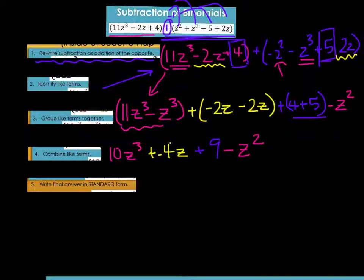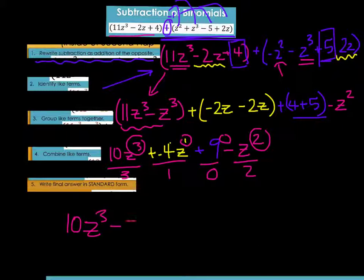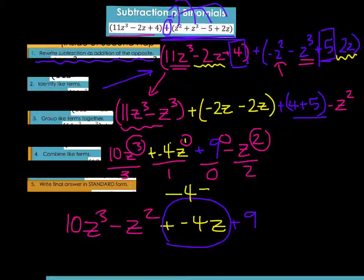Now we need to write our final answer in standard form, so we find the degrees of each term. The 10z to the third has degree 3; negative 4z has degree 1 (since the exponent on z is 1); 9 has degree 0 (since z to the 0 is 1); and negative z squared has degree 2. Writing from greatest to least: 10z cubed minus z squared minus 4z plus 9. The negative 4z could also be written as minus 4z — either works.